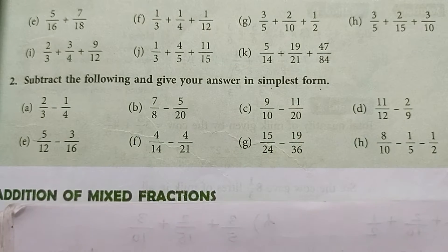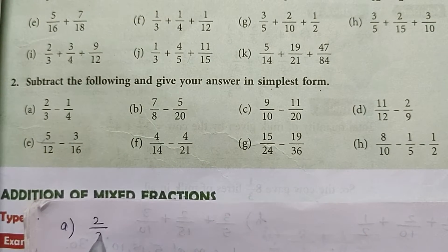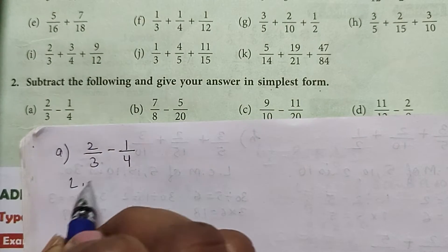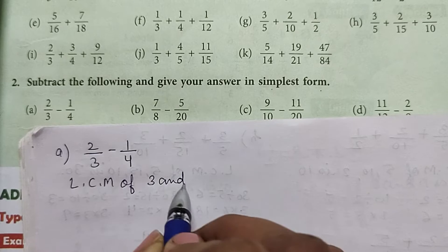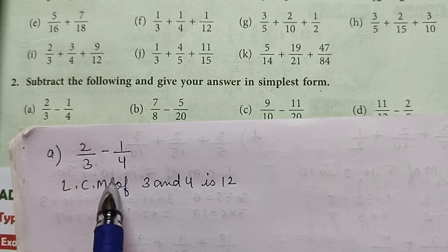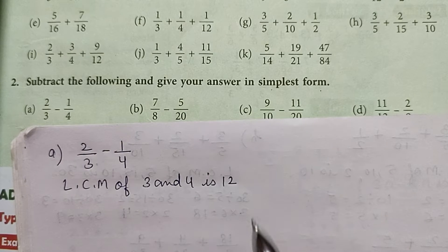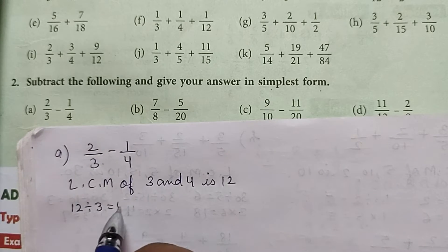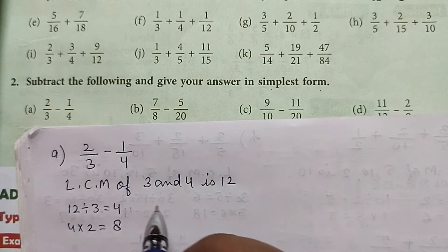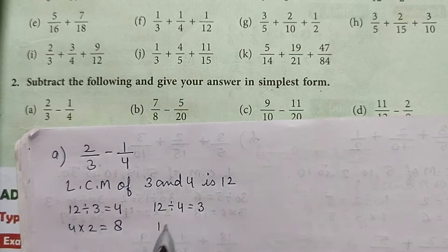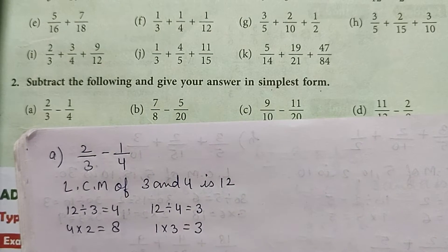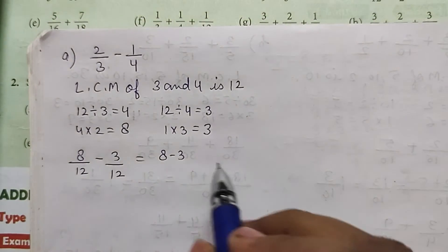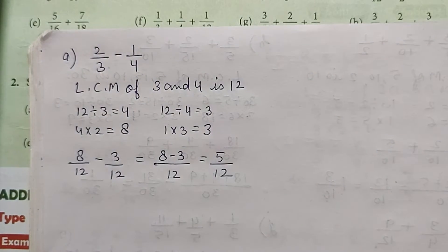Let's start with the first part: 2/3 minus 1/4. The LCM of 3 and 4 is 12. Same as we have done addition of like fractions, we will change them and subtract them. We divide: 12 divided by 3 is 4, and 4 into 2 is 8. 12 divided by 4 is 3, and 1 into 3 is 3. So the fractions are 8/12 minus 3/12, which gives 5/12.